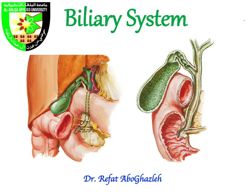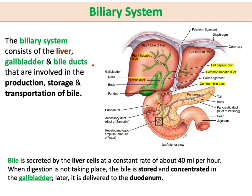Welcome everyone to another lecture on the GI system. In this lecture I will talk about the biliary system. When we say biliary system, the bile is synthesized in the liver, then transferred through ducts to another structure known as the gallbladder. In the gallbladder it is stored and concentrated until needed, then secreted to the second part of the duodenum. The biliary system refers to the liver, gallbladder, and bile ducts in general.